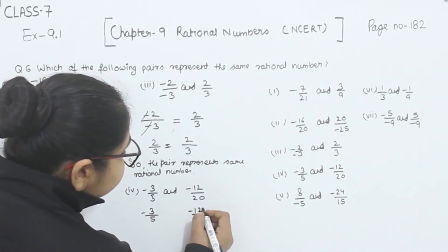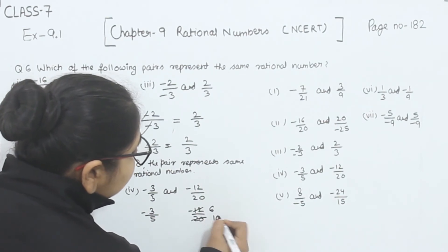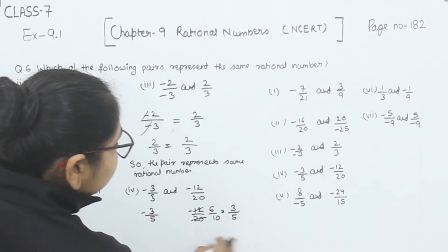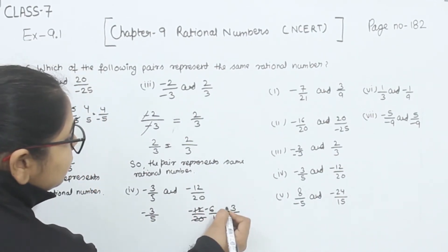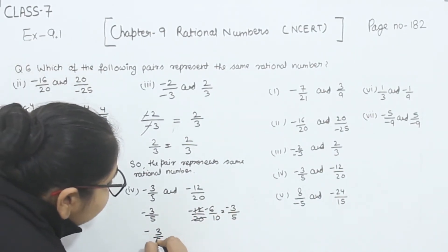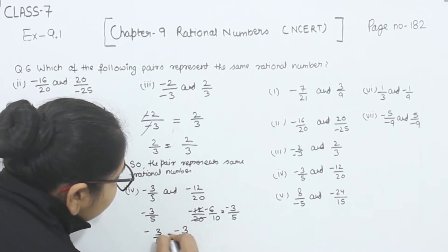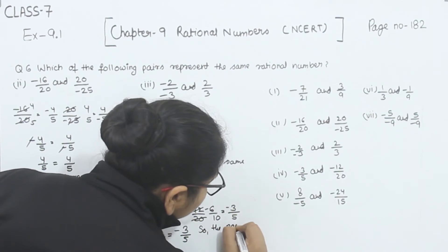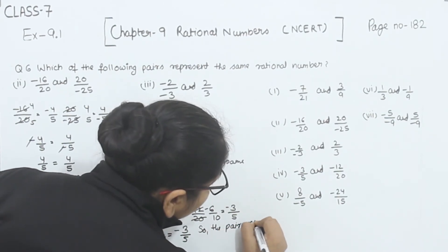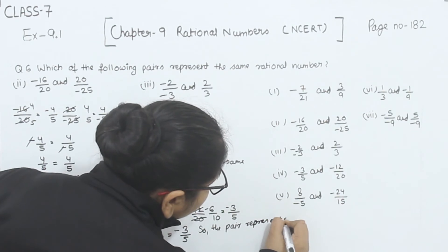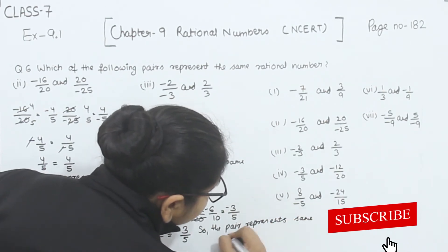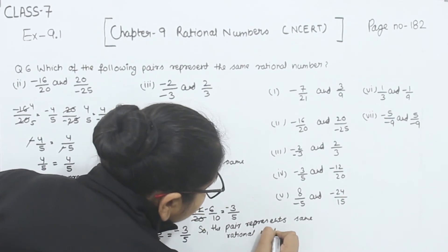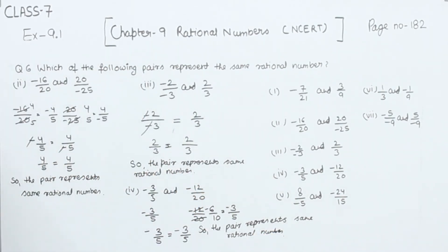For minus 12 by 20: dividing numerator and denominator by 4 — 4 threes are 12, 4 fives are 20 — gives minus 3 by 5. So we have minus 3 by 5 and minus 3 by 5, and they are equal. The given pair represents the same rational number.